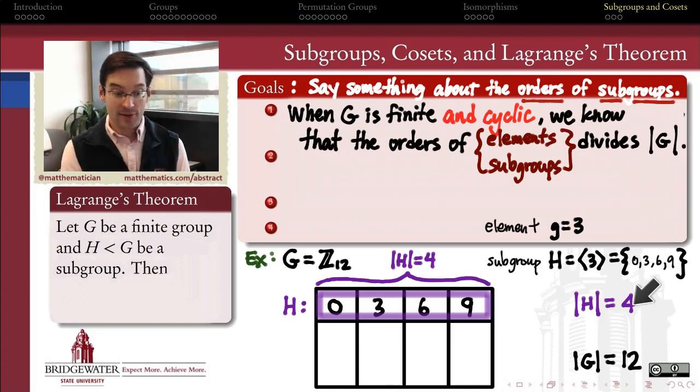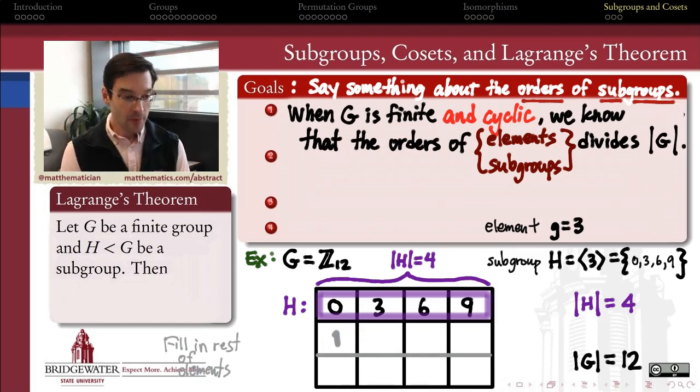And the question is, why is it reasonable in this cyclic group that the order of the subgroup divide the order of the big group? Well, let's just look at how we can take this group H, this subgroup, and think about how all the other elements in my group are related to H. So if I start with 0, 3, 6, and 9, how do I fill in the rest of this table?